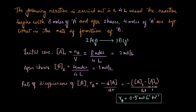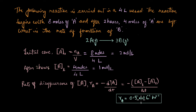Since A is disappearing, its concentration decreases over time, meaning A_T will always be less than the initial concentration A-naught. This is why it is important to account for this difference by placing a negative sign, so that the final reaction rate is a positive value.